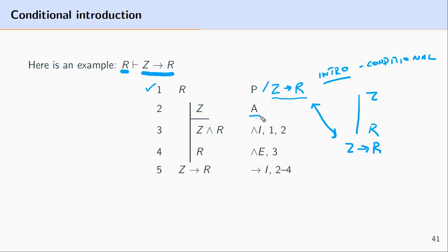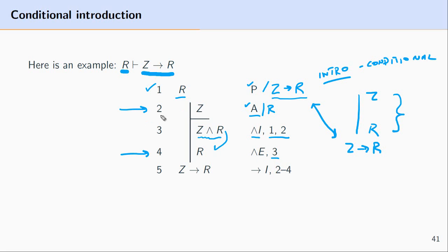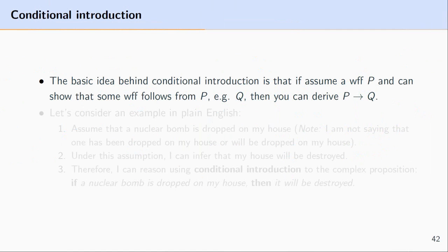So at line two we go ahead and assume Z, and now the goal of this sub proof is to get R. We can get R into this sub proof by using conjunction introduction with lines one and two, forming a conjunction from them. Then since we have a conjunction at line three, we can derive R from that conjunction using conjunction elimination. What we've done is assumed Z and derived R — we assume Z and show that under that assumption R is the case. Conditional introduction says that if you assume a formula and derive another, you can summarize that with the conditional if Z then R.